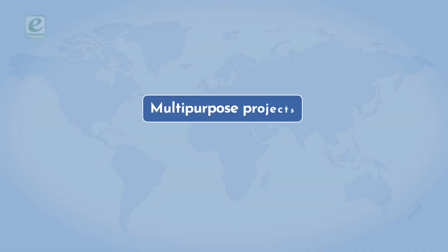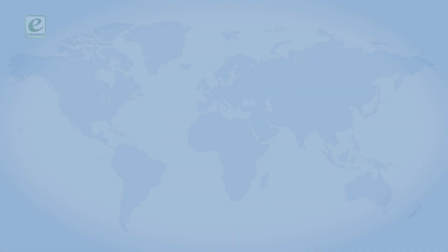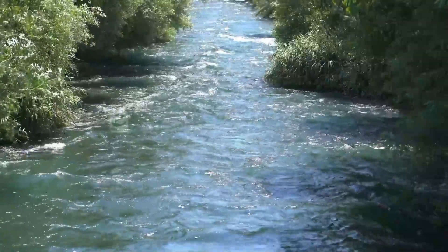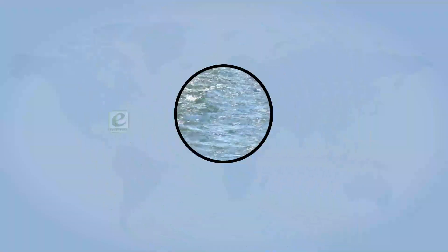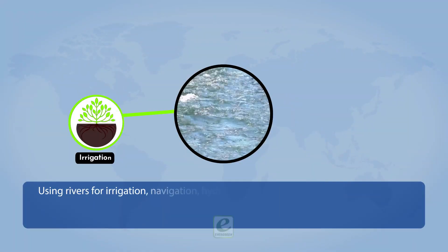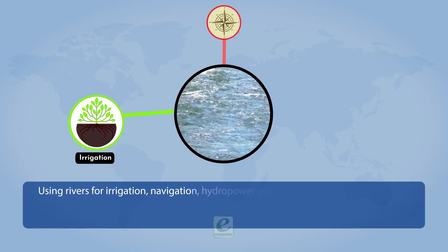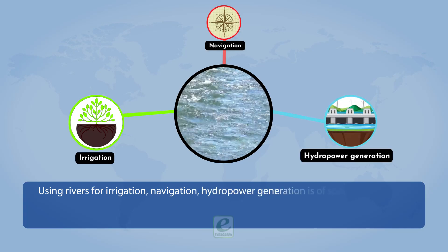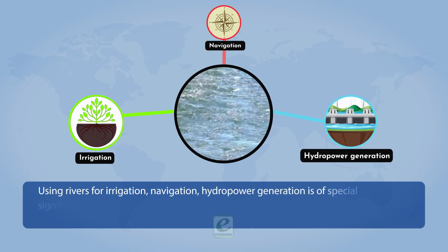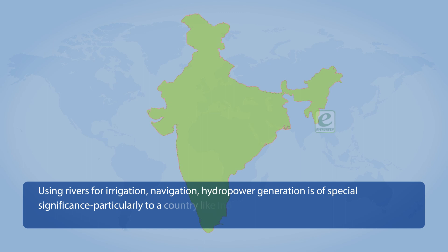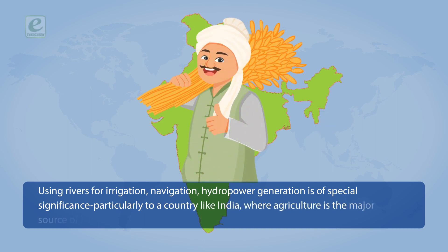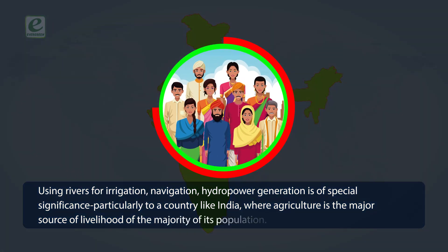Multi-purpose projects. Using rivers for irrigation, navigation, and hydropower generation is of special significance, particularly to a country like India where agriculture is the major source of livelihood of the majority of its population.